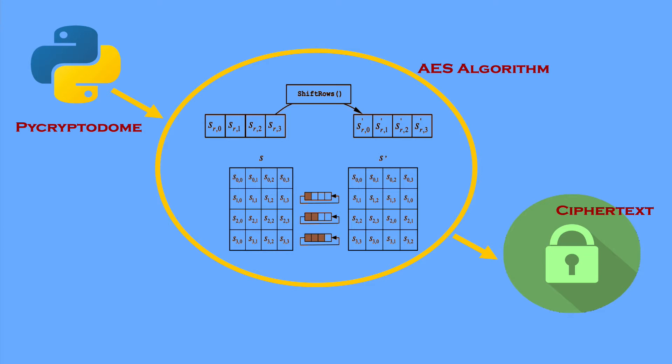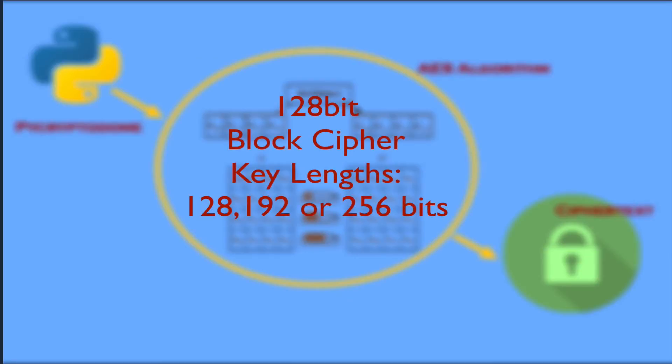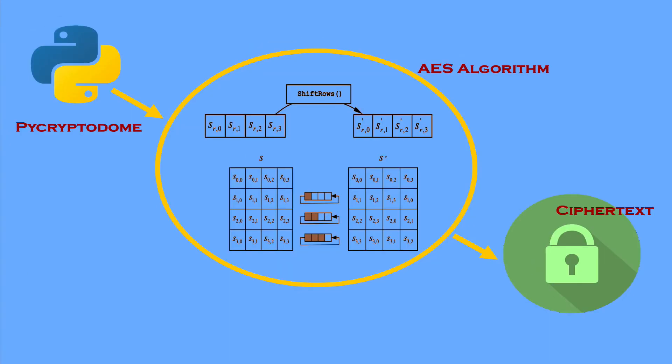AES is very fast and secure for symmetric encryption. If you're not sure what symmetric encryption is, you can check out my video on it — it gives a super quick and simple overview. For now, symmetric encryption is encryption that uses the same key to encrypt and decrypt, similar to a conventional lock that just has one key. AES is a 128-bit block cipher with key lengths of 128, 192, or 256 bits, depending on how paranoid you are about your encryption.